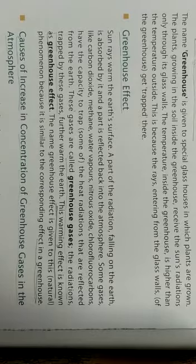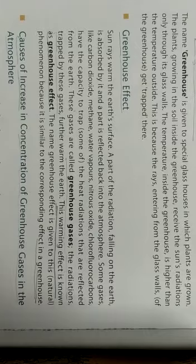So what do you mean by the greenhouse? As the name indicates, a greenhouse is a special glass house in which plants are grown. The plants growing in soil inside the greenhouse receive sun radiation only through its glass walls. The temperature inside the greenhouse is higher than the temperature outside, because the rays entering through the glass wall get trapped there.